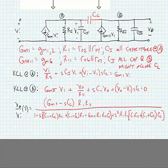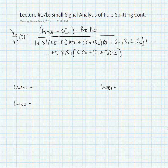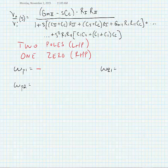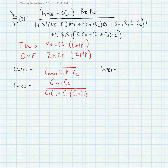And we can look at the frequencies of the poles and zeros in the next slide. So going from the transfer function, we note two poles, both left half plane, and one zero. And this one's a right half plane zero frequency is GM2 divided by SCC.